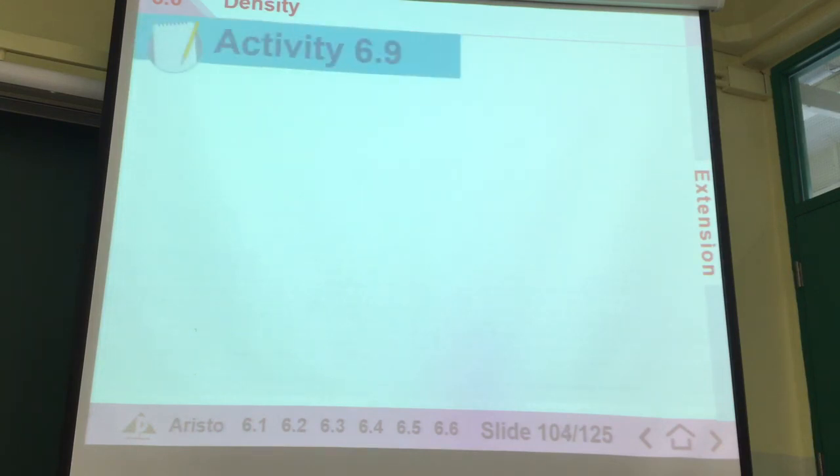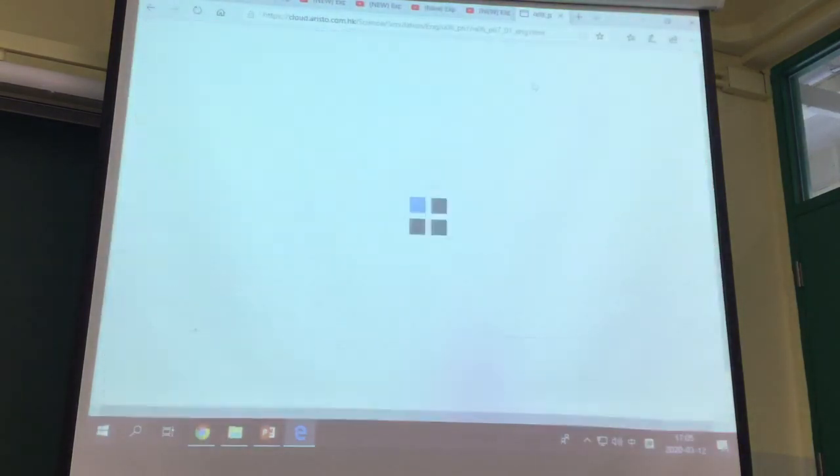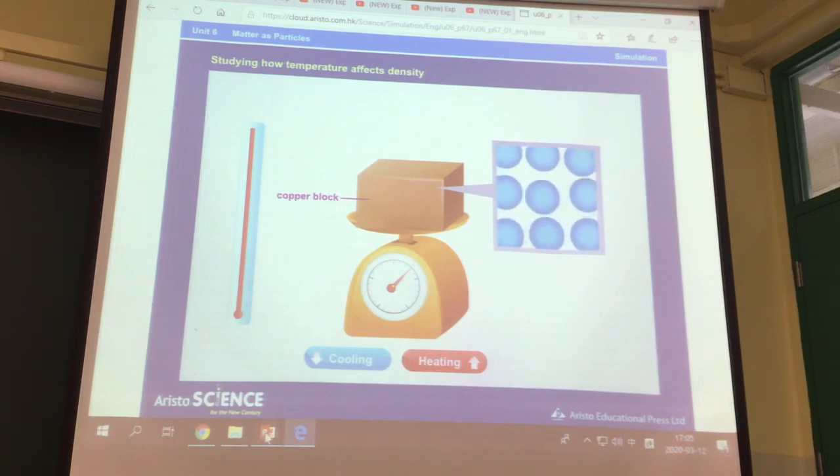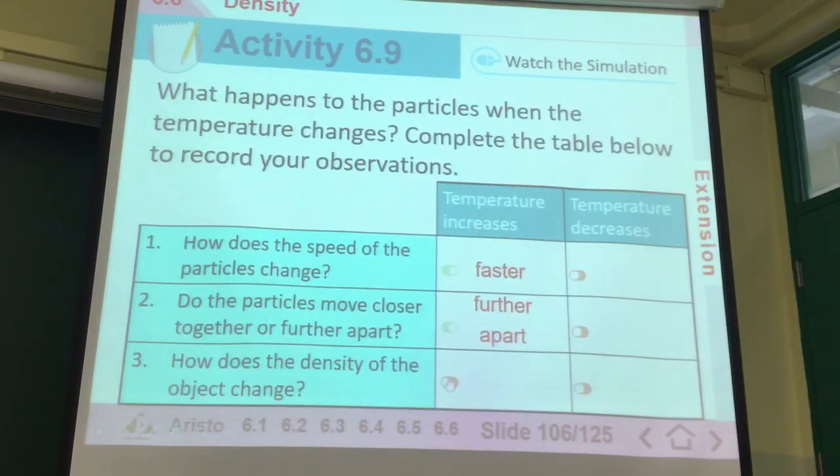The next part is simulation. As we have seen before, we increase the temperature, the particles move faster, and they are further apart, and they will decrease in terms of density. I will just show you the answer here. It is faster, further apart, has lower density, decreases density. When we cool it down, it will be slower, closer together, results in higher density, increasing density.